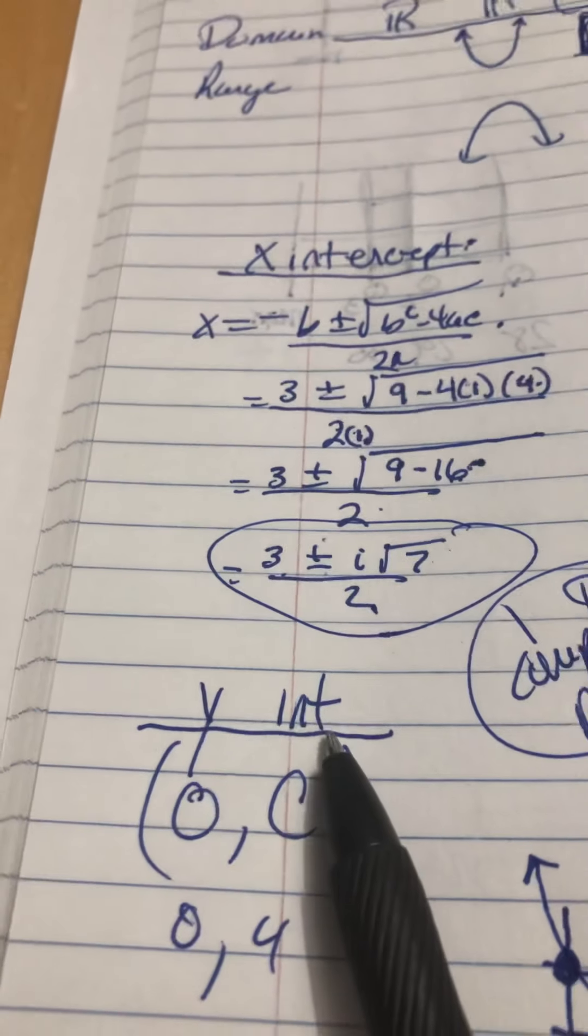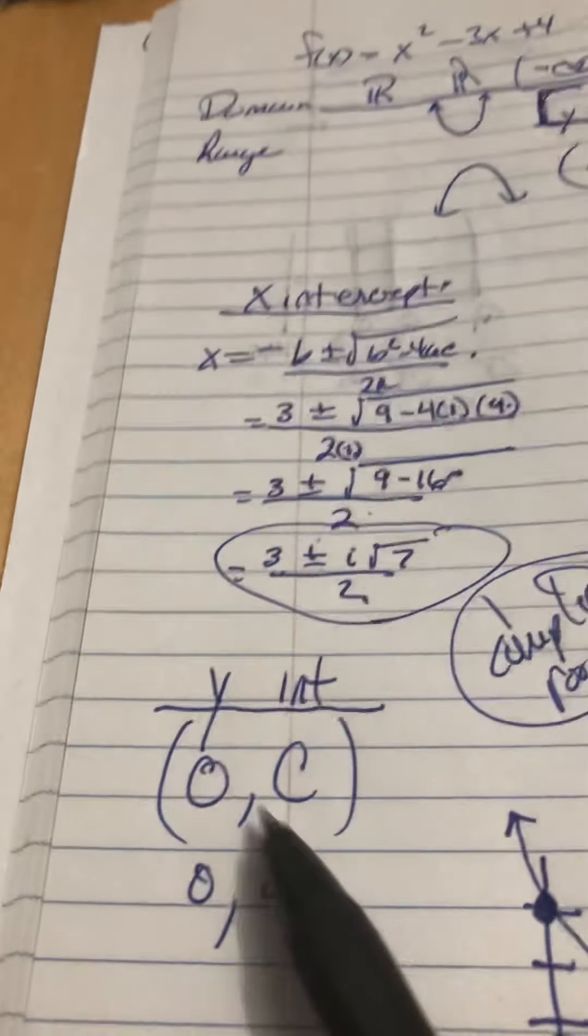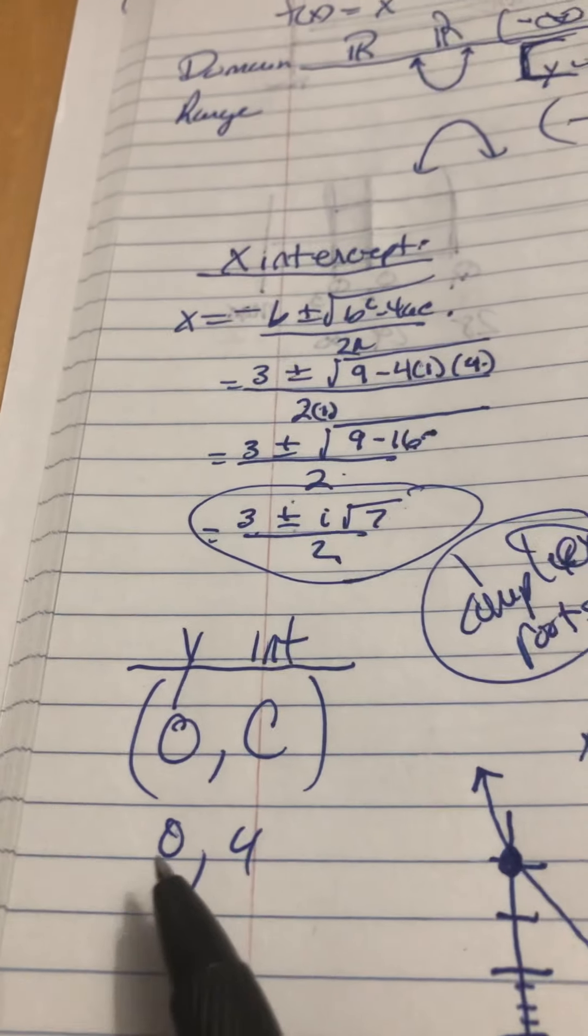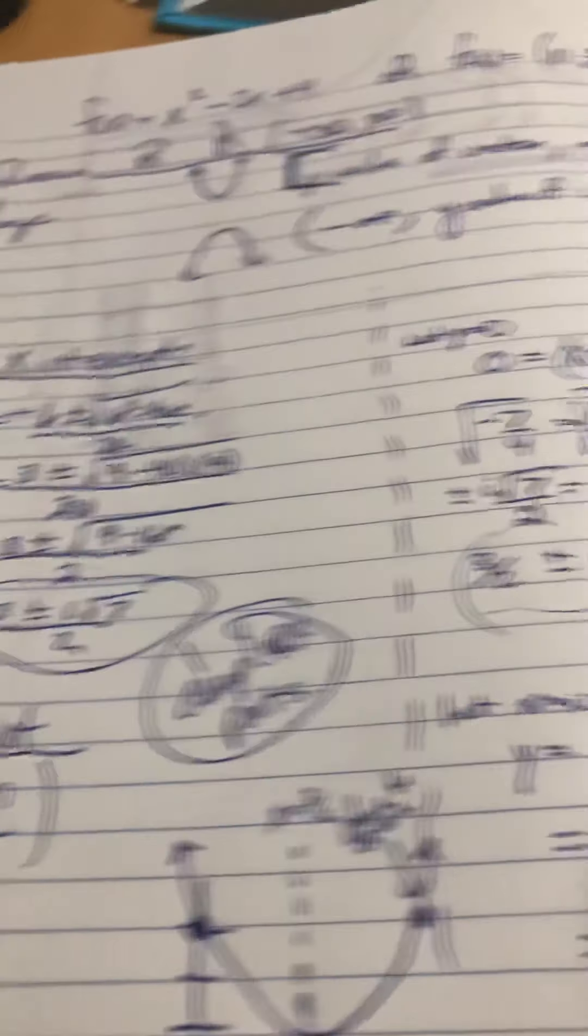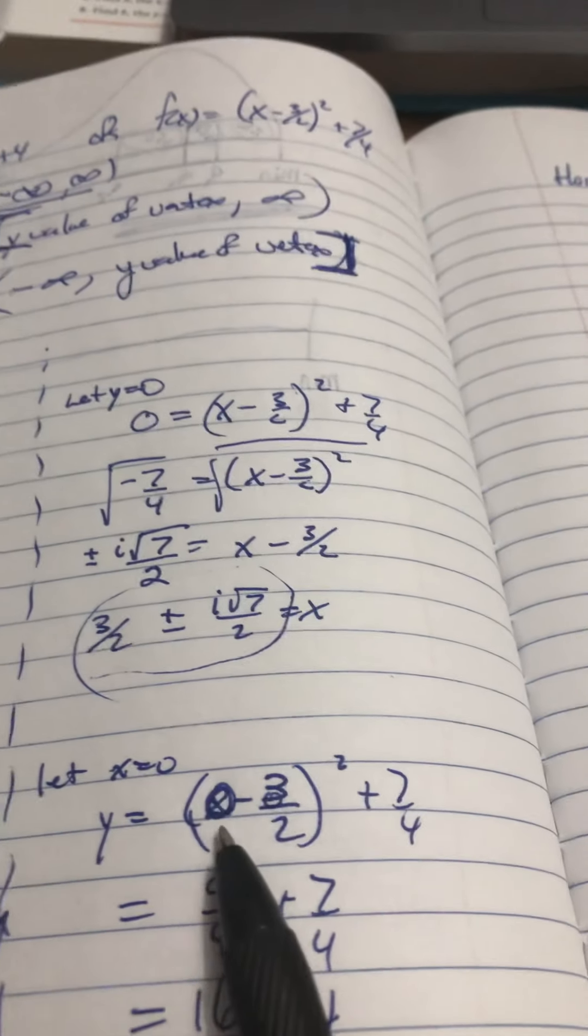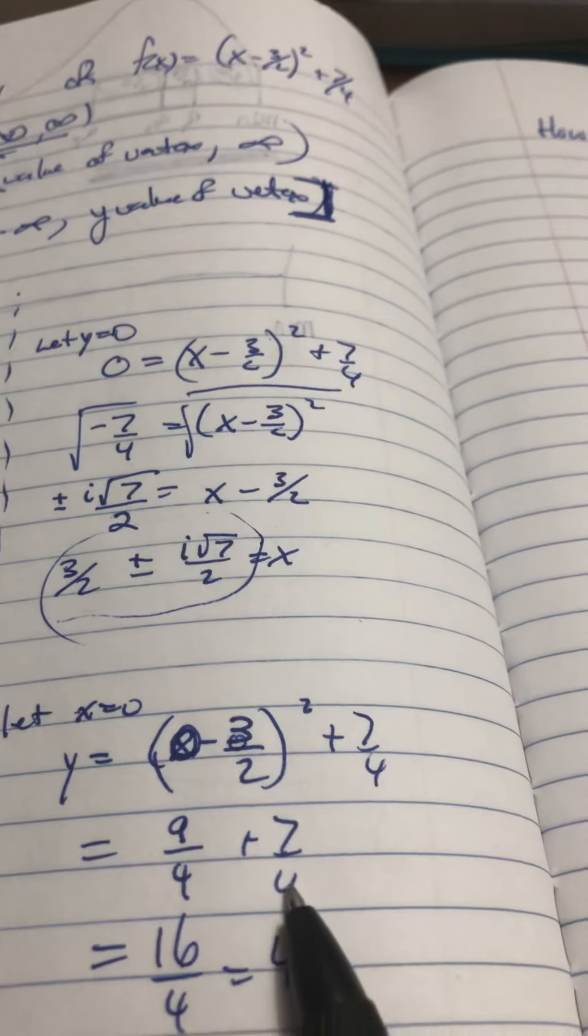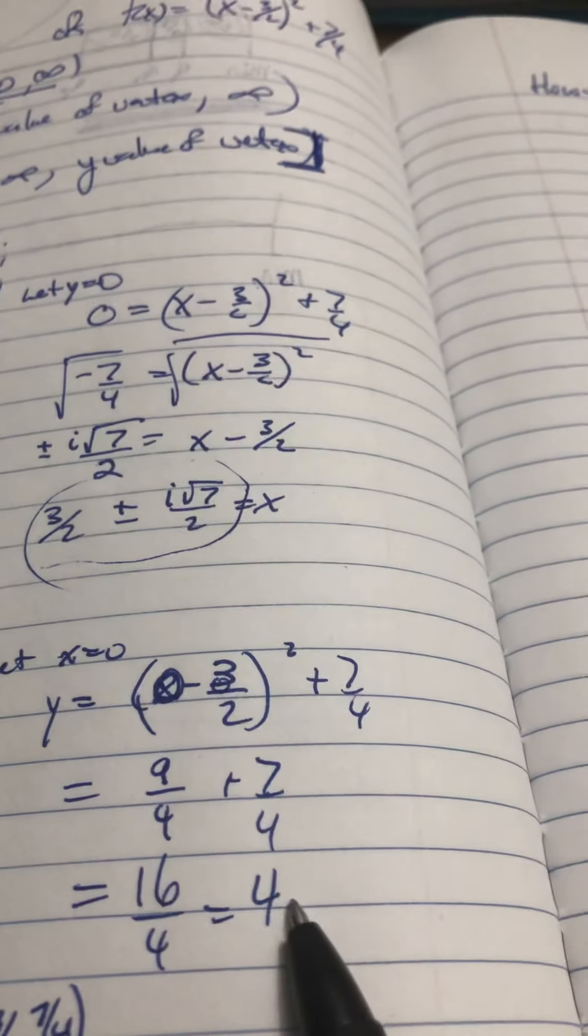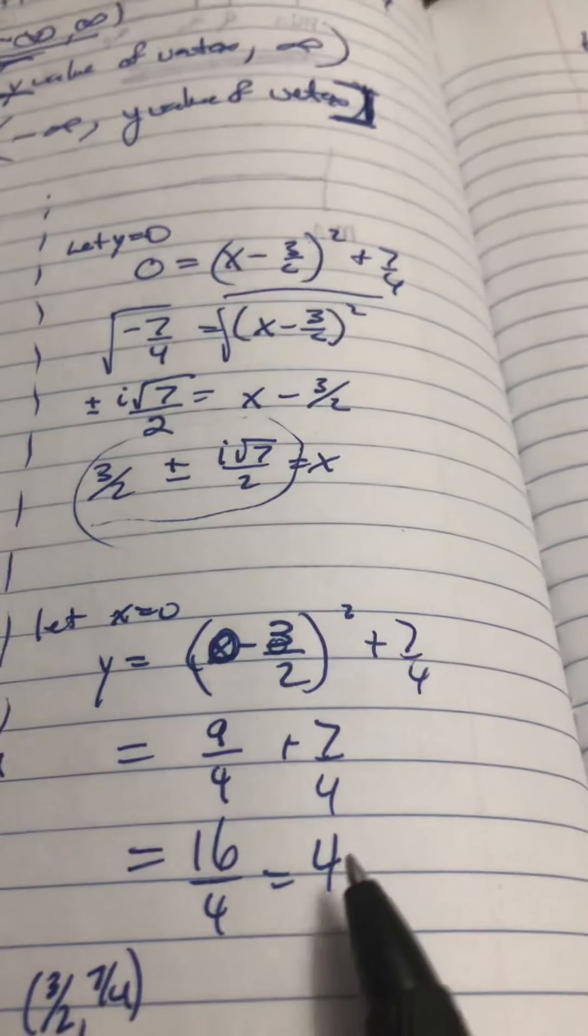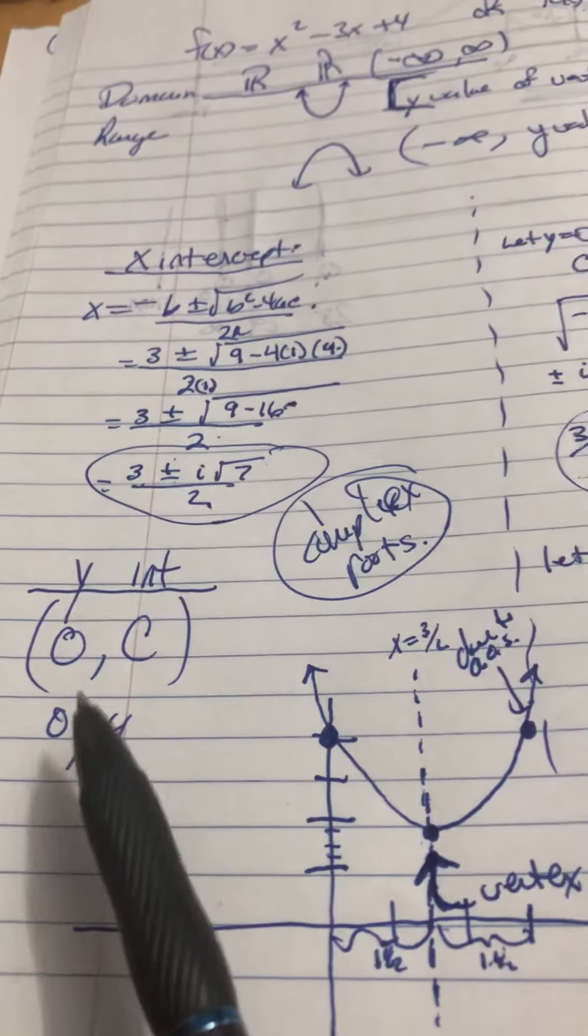The y-intercept in the standard form is just this value with a 0 in front of it. It's 0c. In our instance, it's 0, 4. If you're on the vertex form, you let your x be 0. And that becomes 9 fourths plus 7 fourths, which is 16 fourths, which is just 4. And that's the same ordered pair as what you had over here.